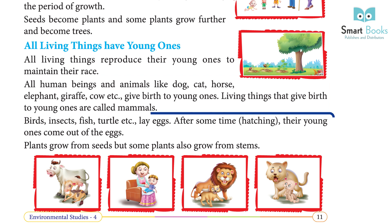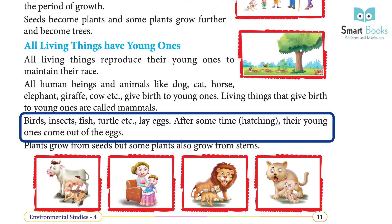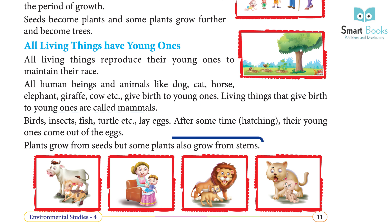Birds, insects, fish, and turtles lay eggs. After some time — hatching — the young ones come out of the eggs. Plants grow from seeds, but some plants also grow from stems.